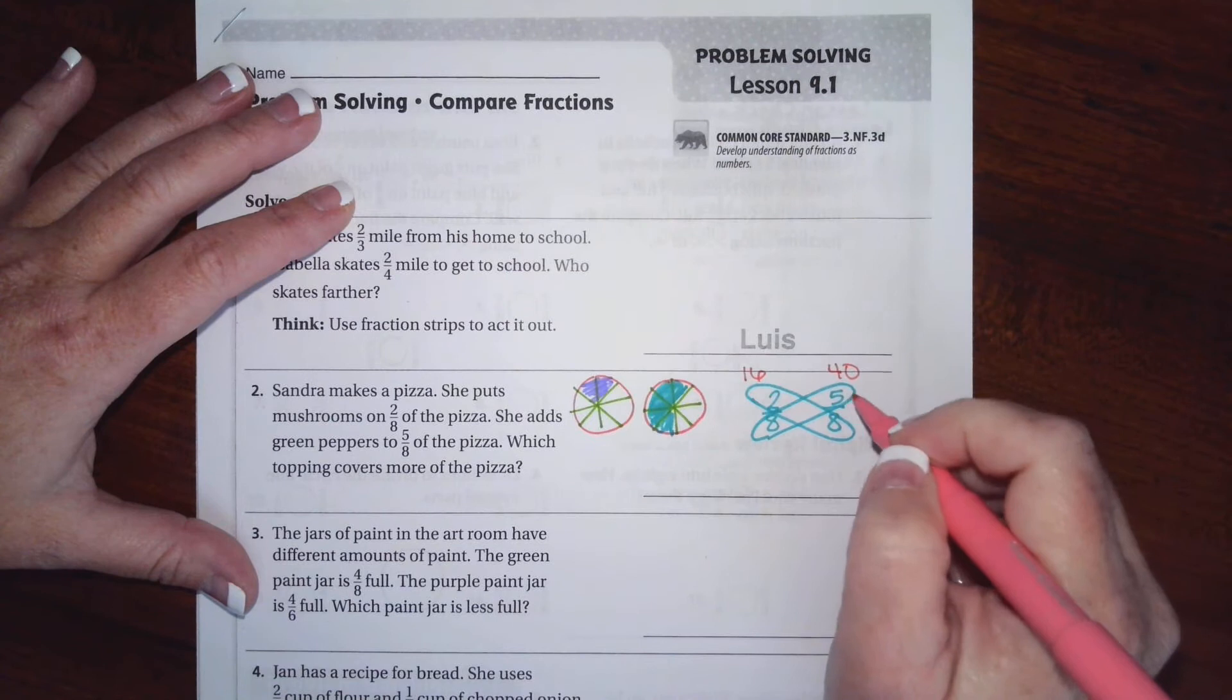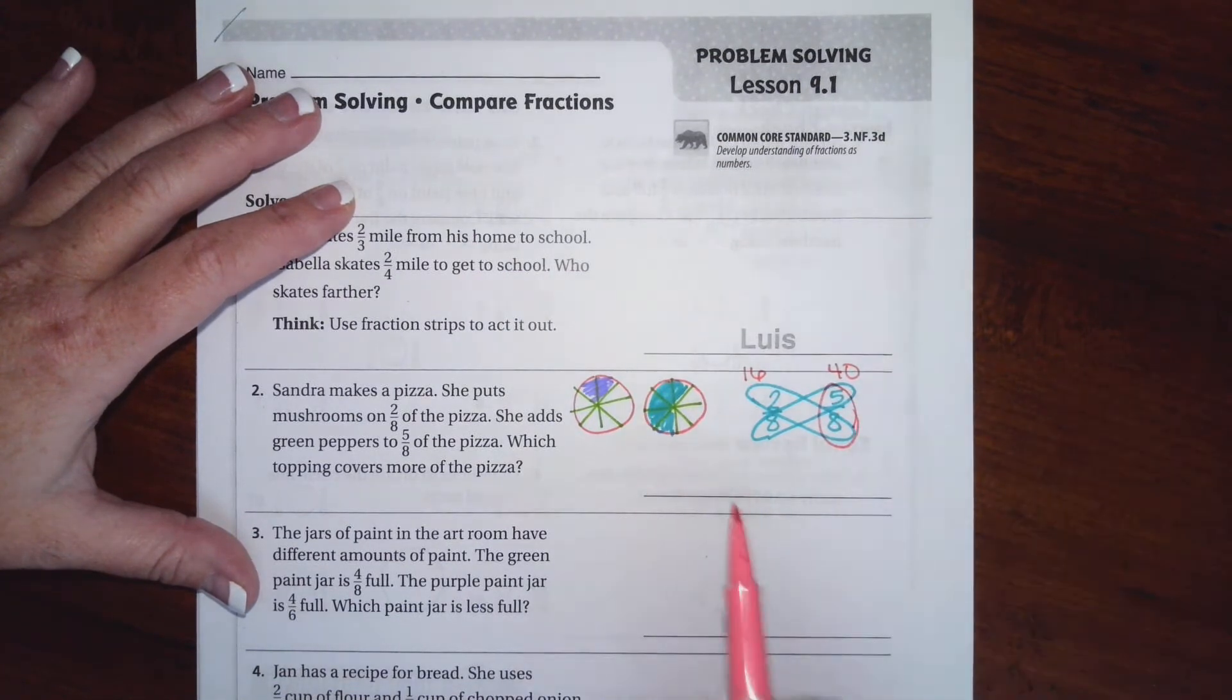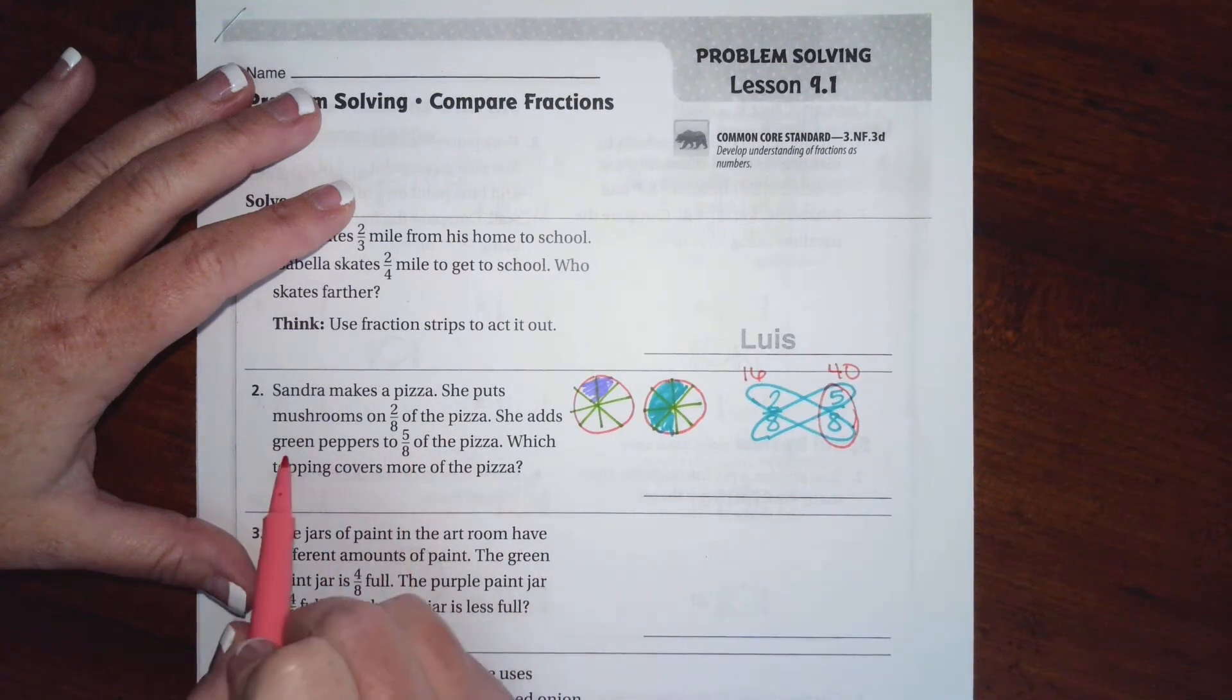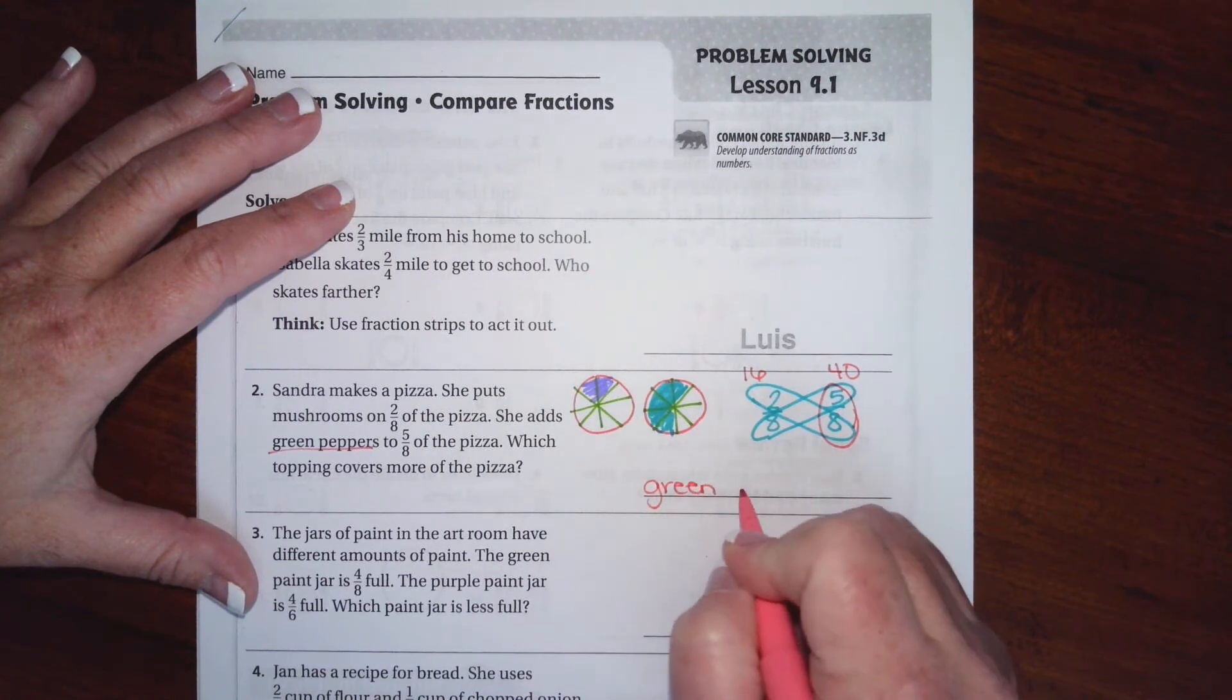8 times 5 is 40. Well, which one's bigger? Well, 40 is. That means 5/8 is bigger. So the one with 5/8 is the green pepper. So the answer here would be green peppers.